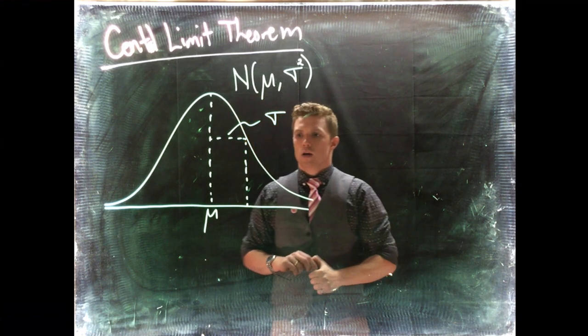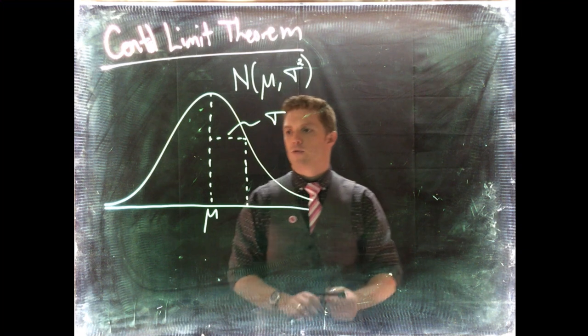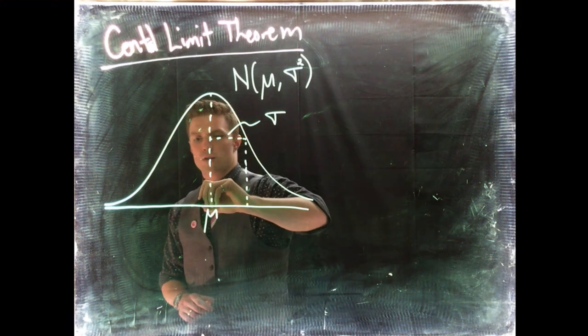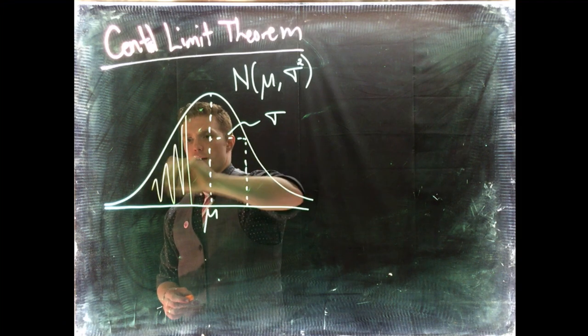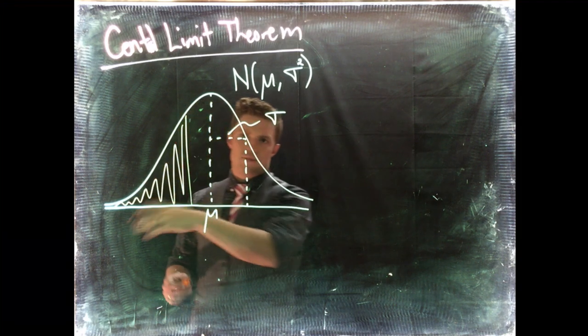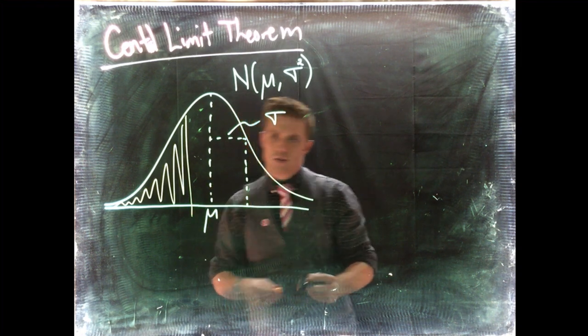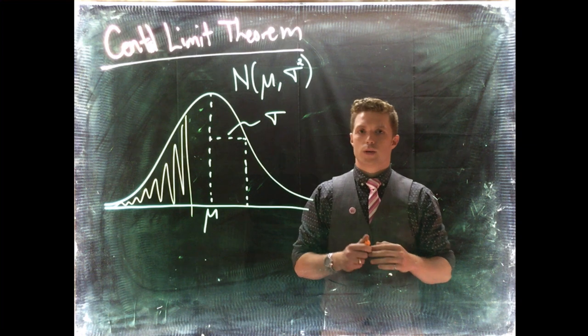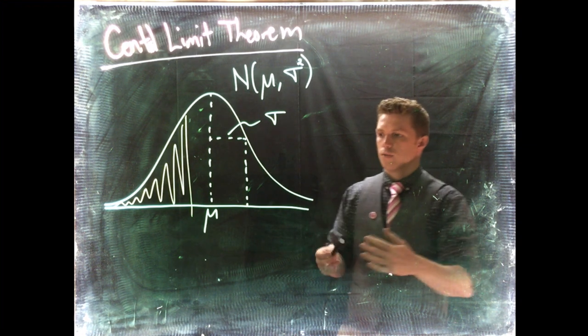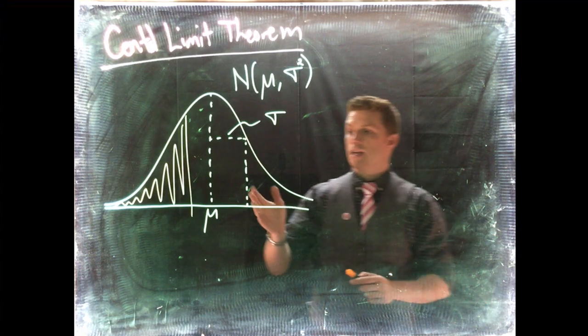We have some distribution and what we have been talking about before is let's take some critical value and find the probability or the area under the curve of either to the left or to the right. We've been taking like a single critical value. Now what we're going to do is we're going to take this a step further.